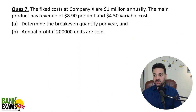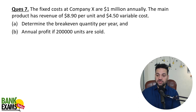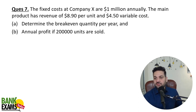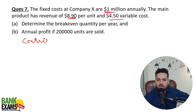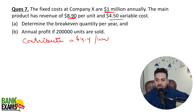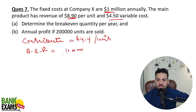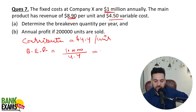The seventh and last question — pause the video and try to solve it yourself. Fixed cost is 1 million, revenue or sales price is $8.9 per unit, variable cost is $4.5. Contribution is 8.9 minus 4.5 = $4.4 per unit. Break-even point is 1 million divided by 4.4 = 2,27,273 units.